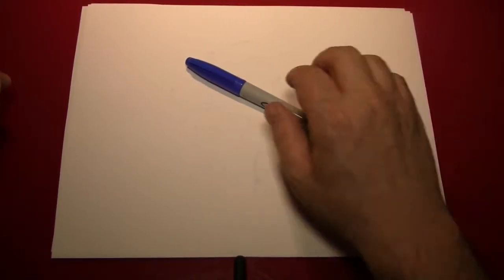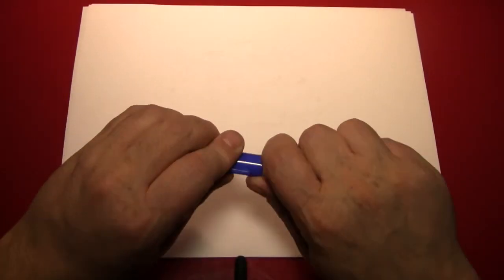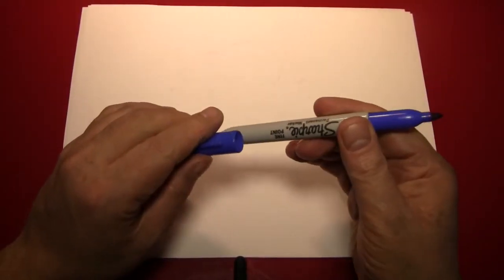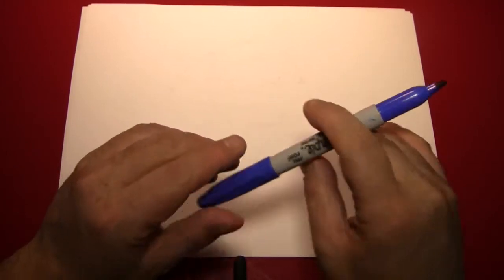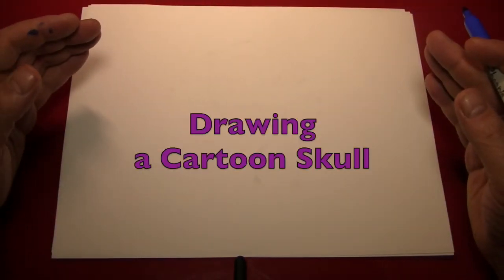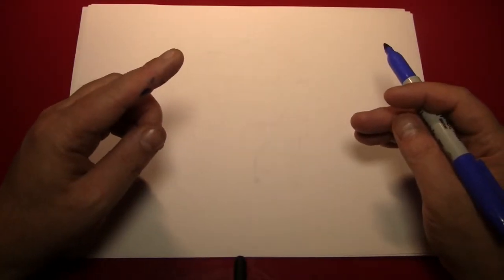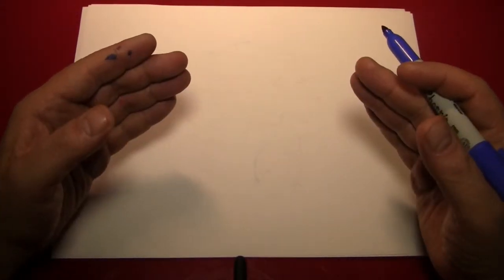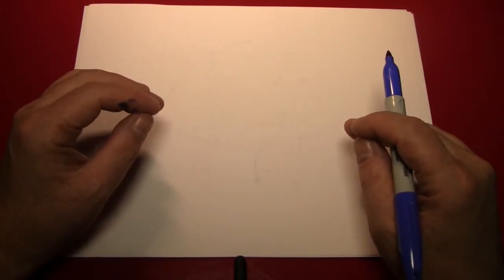Hello again, everybody. It's the Reverend Jay Goldstein, and welcome to another episode of Doodling with Reverend Jay. Today's episode, we're going to be drawing a cartoon skull. A human cartoon skull, or a cartoon human skull. Whichever you prefer. So let's get started.